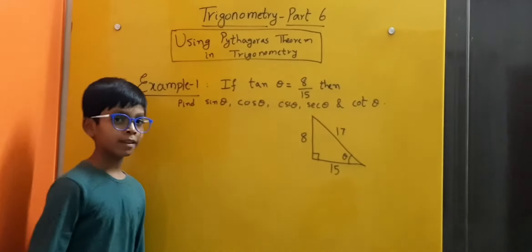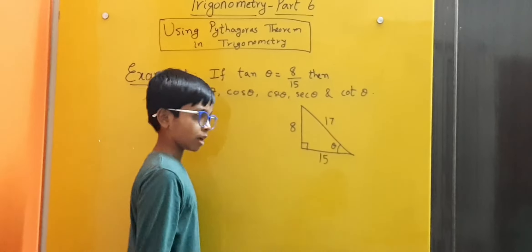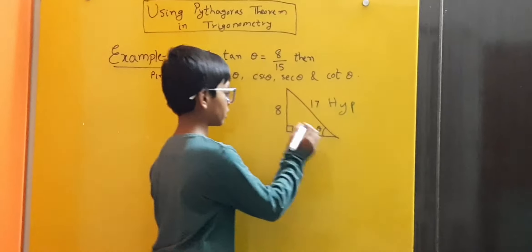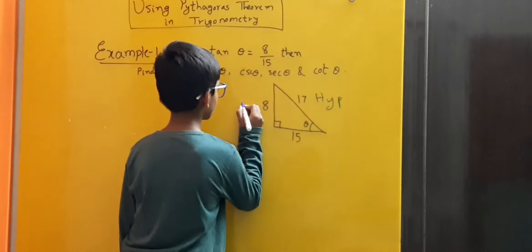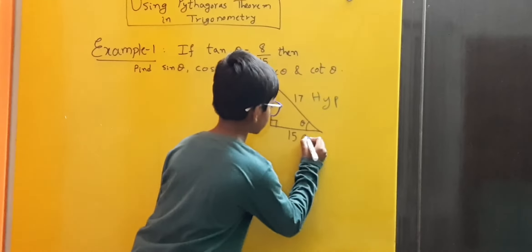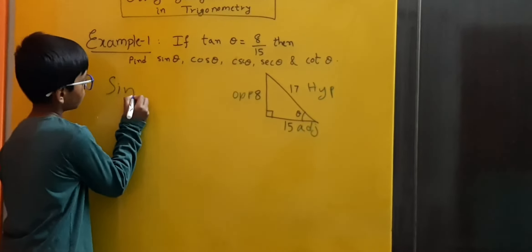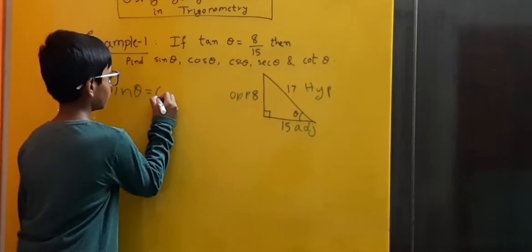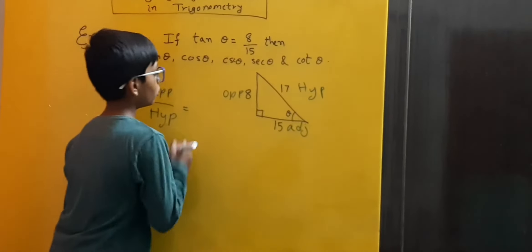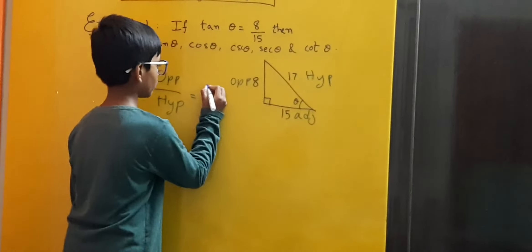Now let us find sine theta. First, let us label the sides. The longest side in the triangle is the hypotenuse, so 17 is the hypotenuse. The side opposite to theta is 8, and the remaining side, 15, is the adjacent side. Sine theta is equal to opposite by hypotenuse, and here 8 is the opposite and 17 is the hypotenuse, so we write 8 by 17.